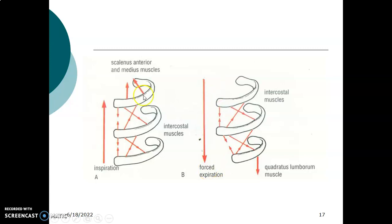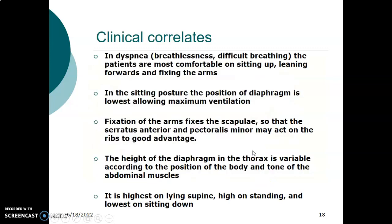During inspiration, the scalenus anterior and medius muscles fix the first rib, and the ribs move upwards and outwards to cause inspiration. During forced expiration, quadratus lumborum depresses the 12th rib. Turning to clinical correlates: dyspnea is breathlessness — when a patient has difficulty breathing, we call that dyspnea.